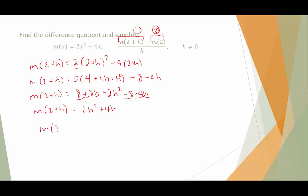Step 2 is plugging in m(2). When I plug in 2, I get 2 times 2 squared minus 4 times 2. 2 squared is 4, and 4 times 2 is 8. And then here, 4 times 2 is 8, and 8 minus 8 is 0. Oh, that's nice.